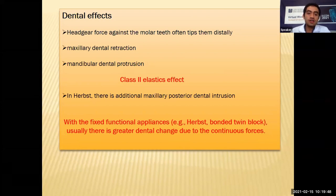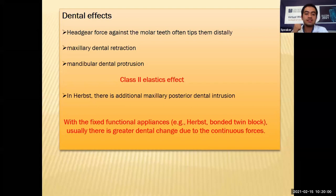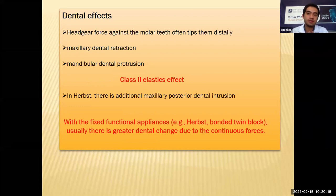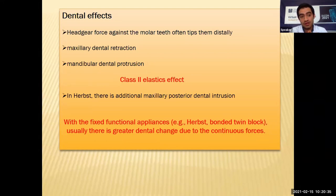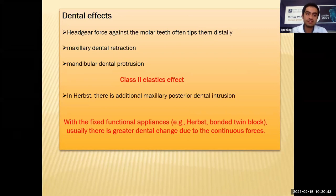With fixed functional appliances like Herbst, there is greater dental change due to continuous force — the patient always wears the appliance and it is completely tooth-borne. In the Herbst appliance specifically, there is additional maxillary posterior dental intrusion, which is why some textbooks say Herbst is a good appliance for long-faced patients — it not only corrects mandibular position but also intrudes the molars to address vertical problems. We expect more dental effects in fixed appliances compared to removable ones.